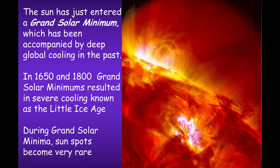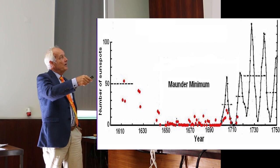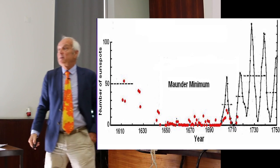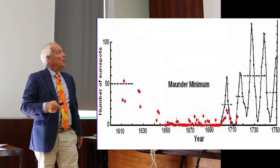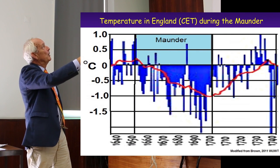The Sun has just entered into a grand solar minimum, which has been accompanied by deep global cooling. Deep global cooling in the 1650s to 1800s grand solar minima resulted in several coolings known as the little ice ages. During grand solar minima, sunspots became rare to absent. The well-known Maunder minimum had hardly any sunspots at all. Then comes the 11-year sunspot cycle. This is what a grand solar minima looks like, and here we are going into a grand solar maximum — that is the difference, and that has clear impact on Earth's climate.